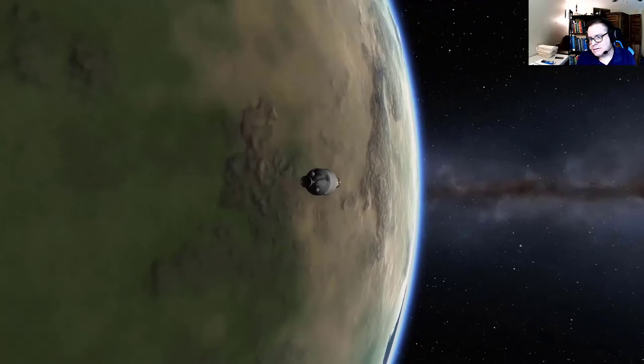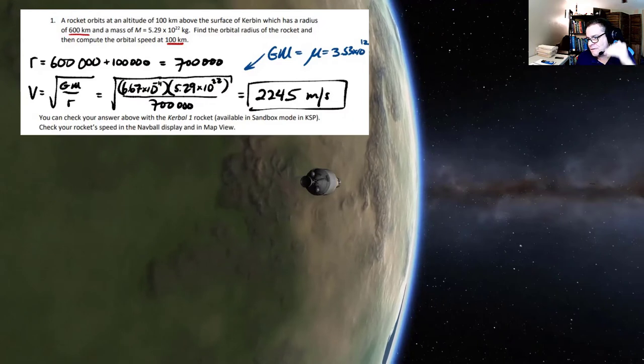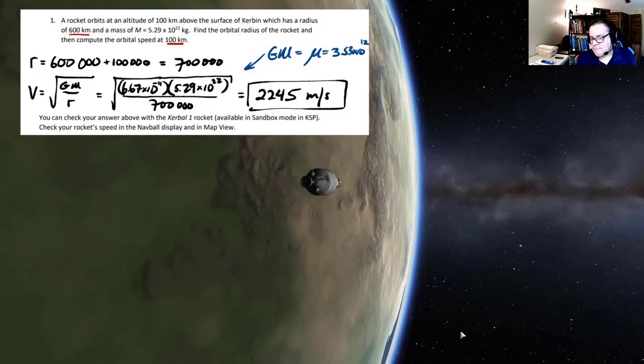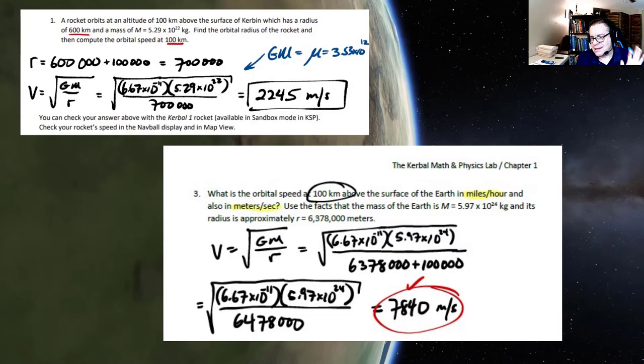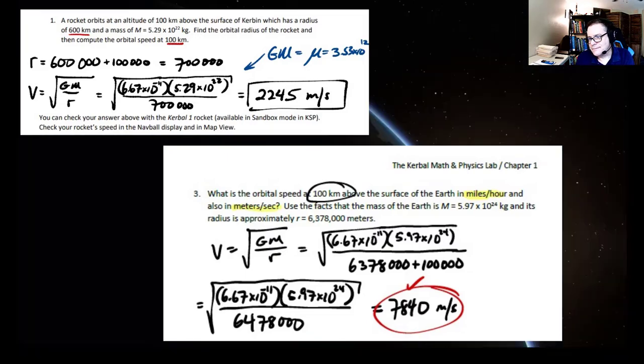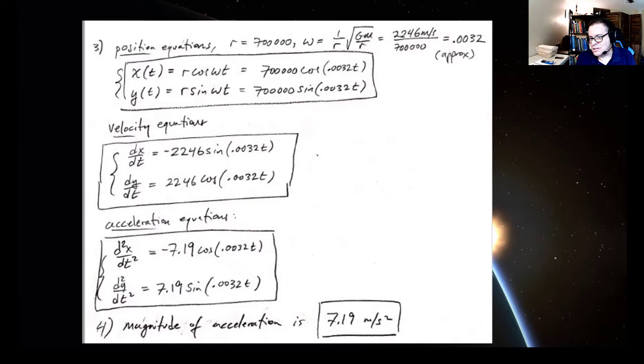Calculate orbital speed at different altitudes above Earth, the moon, Mars, any planet. Again, there is a level that is introductory algebra, and there are also lessons here in the calculus of parametric equations that are used to derive that algebraic formula.